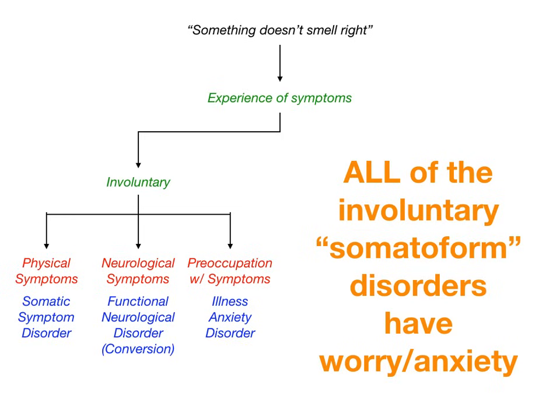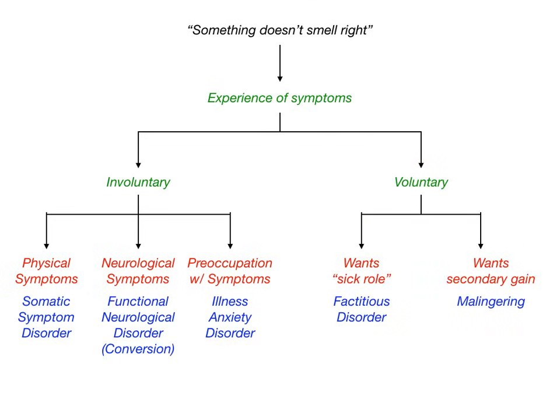To recap the involuntary side: real physical symptoms = somatic symptom disorder; non-present symptoms with worry about them = illness anxiety disorder; real neurological symptoms = functional neurological disorder. Now let's move to the right side of the flowchart — the voluntary side. The patient is voluntarily producing symptoms or signs that aren't really there. The key question is: what is their goal? That's how you differentiate factitious disorder from malingering.